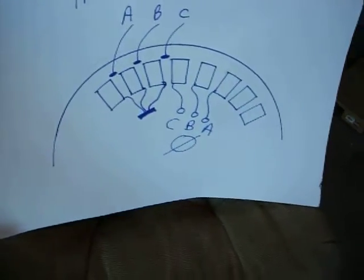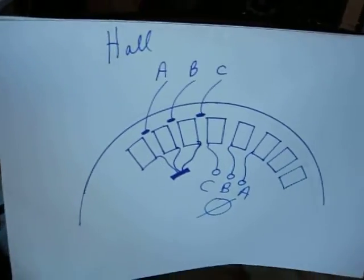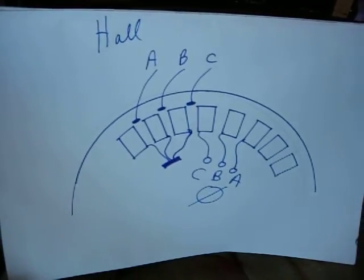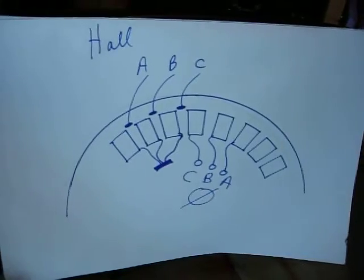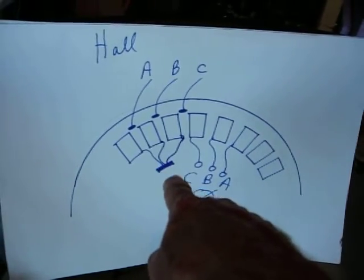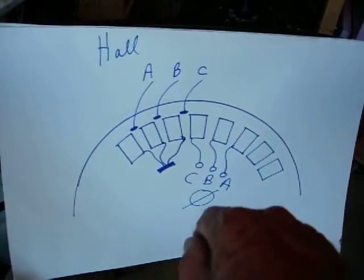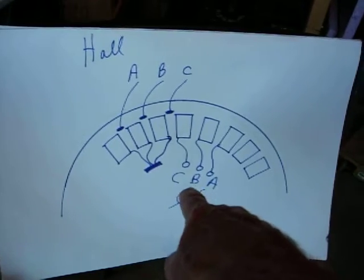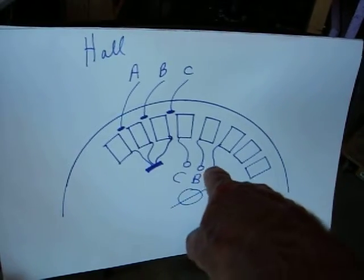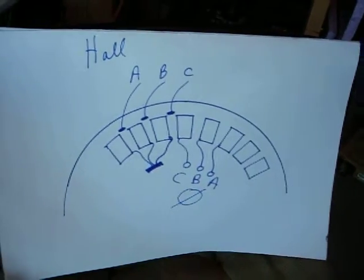It shows the hall sensors and the placement. Down here there's a tie point for the three phases. You'll see there's a C, B, and A that goes to the PC board. Then the C, B, and A on the three phases are to the right of that.